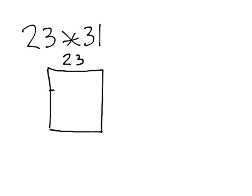We then split the rectangle to show one group of 23 on top and 30 groups of 23 on the bottom. Now you solve for the product of the 1 and 23 which is 23, and then we solve for the product of 30 and 23 which is 690.